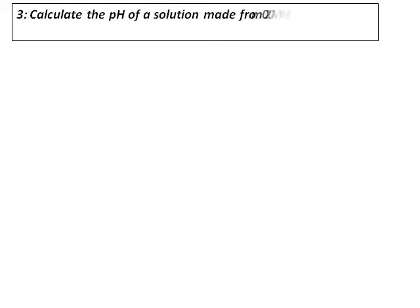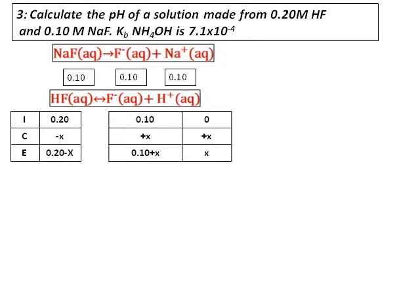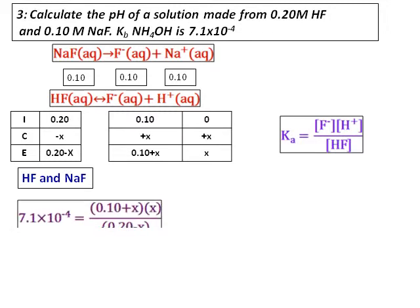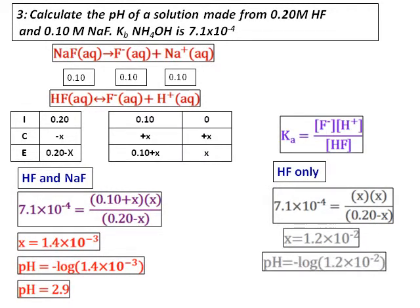Finally, let's calculate the pH of a solution made from 0.20 molar HF and 0.10 molar sodium fluoride. The Ka of HF is given. Start with the equation for the ionization of sodium fluoride, with concentrations of sodium fluoride, fluoride, and sodium ions given. Set up the equilibrium reaction of HF, construct the ICE table, substitute all values into the Ka equation, and calculate x to get pH. When we compare with pure HF alone, the pH is lower than when sodium fluoride is added — confirming that the addition of a common ion decreases the hydrogen ion concentration and increases the pH.